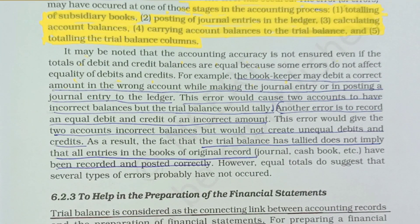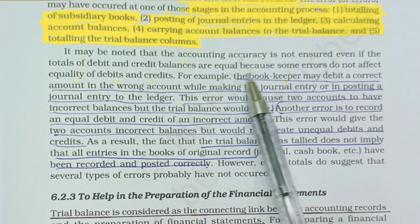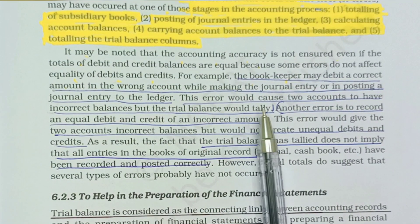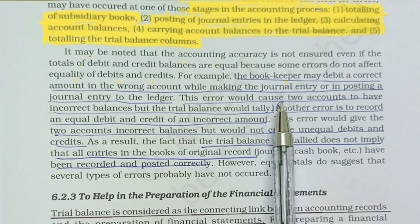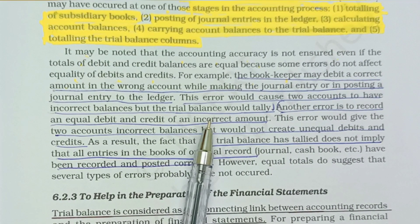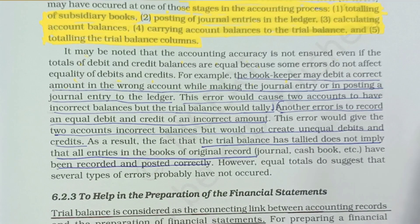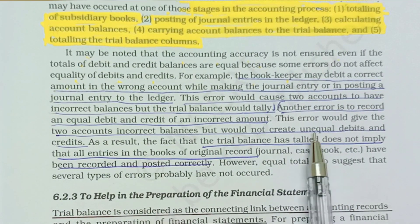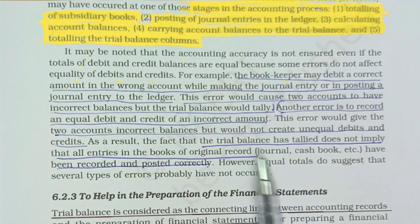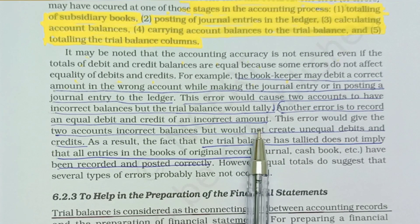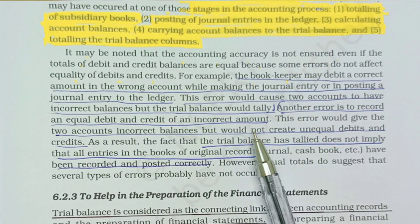However, if a bookkeeper debits a correct amount to the wrong account, the debit and credit totals will still be equal and the trial balance will still tally. Such mistakes are not detected by the trial balance. So we have to ensure the correct account is used.